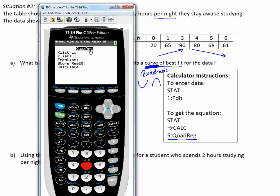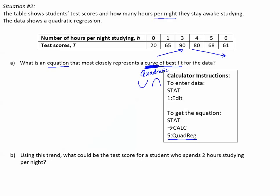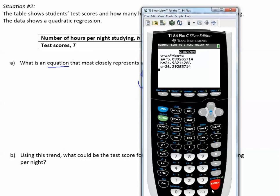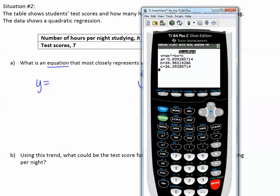Notice it says quadratic regression, scroll down or keep pressing ENTER to get to CALCULATE, and then press ENTER. Now I'm going to write down what my calculator shows me. y equals, to begin, ax squared.